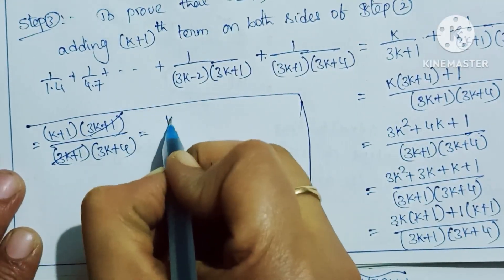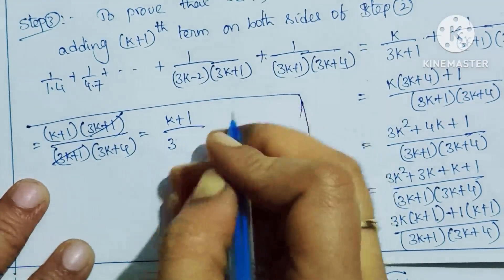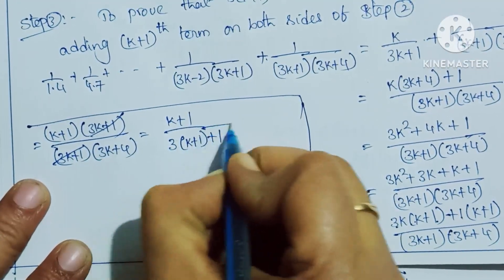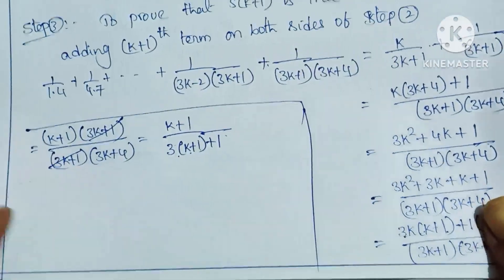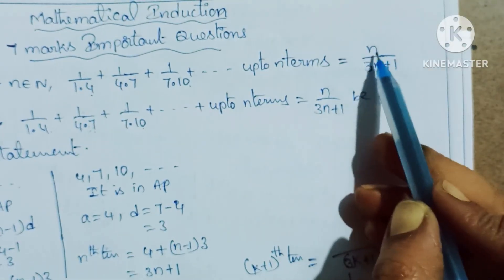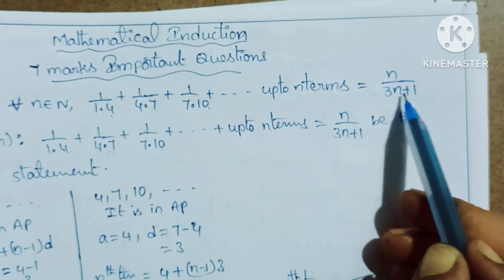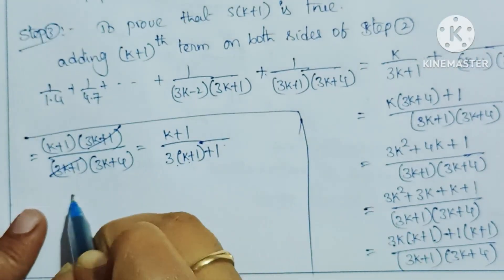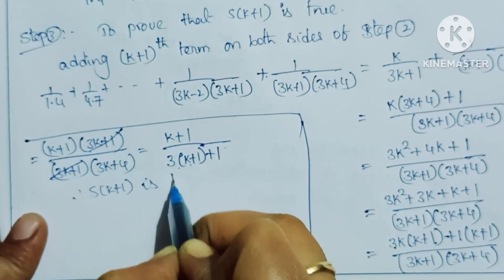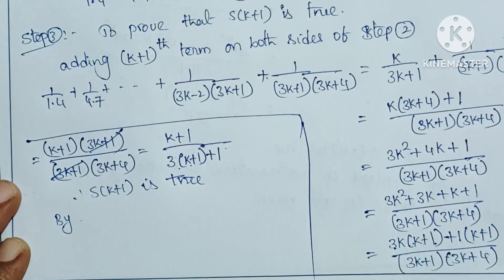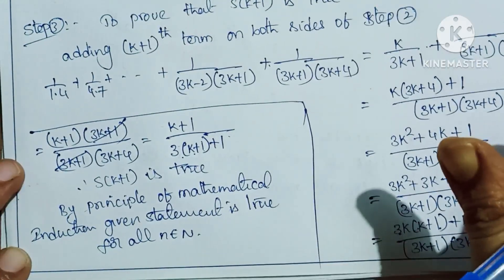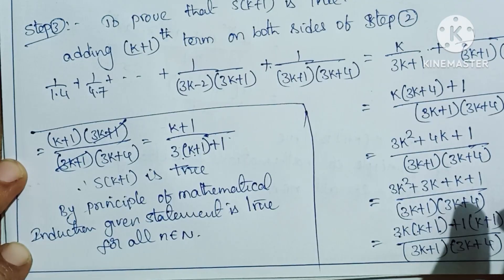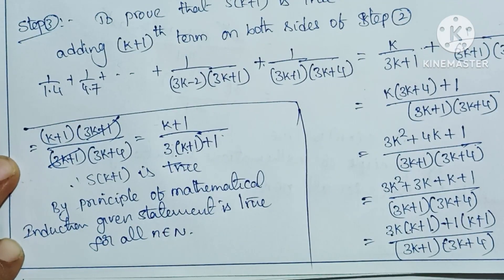Cancelling the common factor (3k+1), we get (k+1)/(3k+4), which equals (k+1)/(3(k+1)+1). This matches the form n/(3n+1) with n replaced by k+1. Therefore S(k+1) is true. By the principle of mathematical induction, the given statement is true for all n belonging to natural numbers.